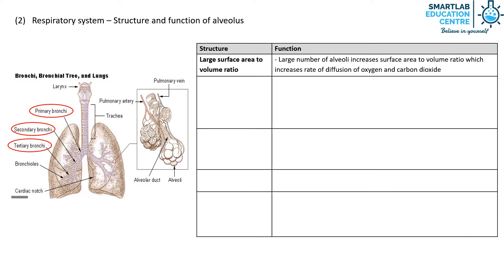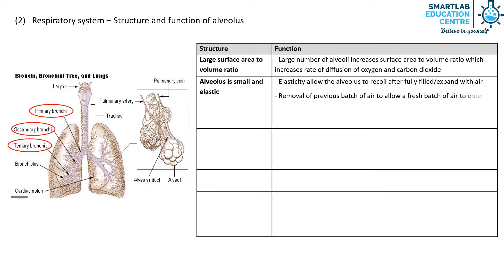Secondly, the alveolus is small and elastic. The elasticity enables the alveolus to recoil after it is fully filled or expands with air. This allows the removal of the previous batch of air, allowing a fresh batch of air to enter. Thirdly, the alveolus is one cell thick, which reduces the distance required for the diffusion of gases.